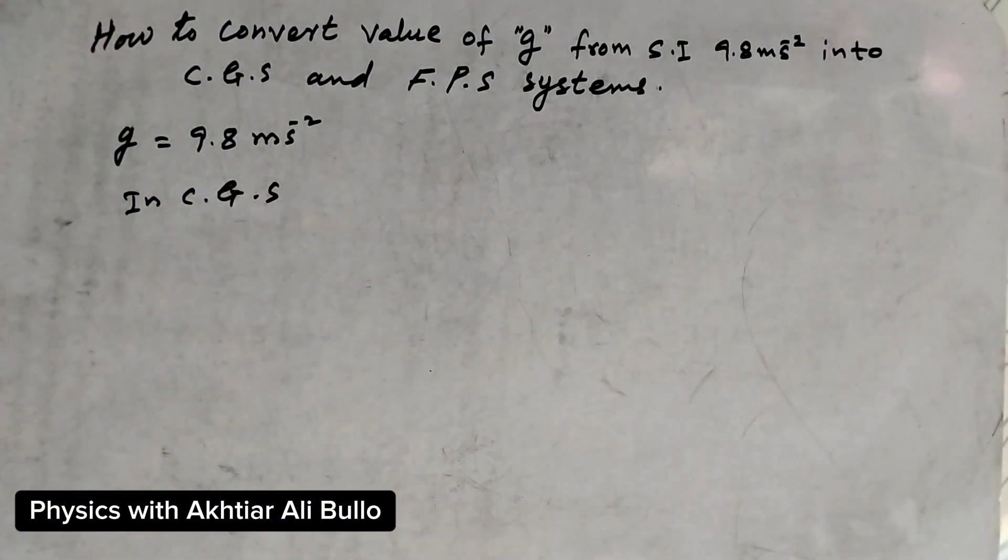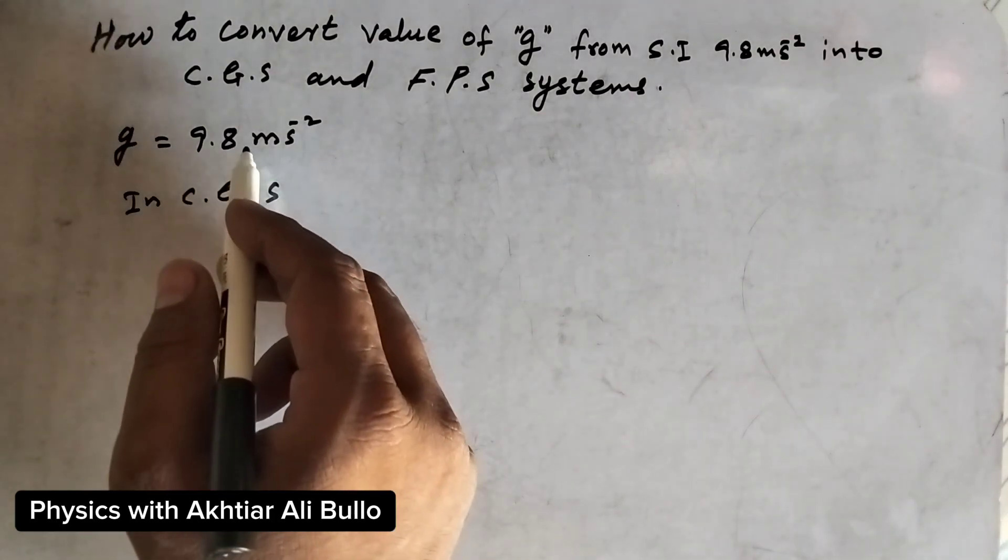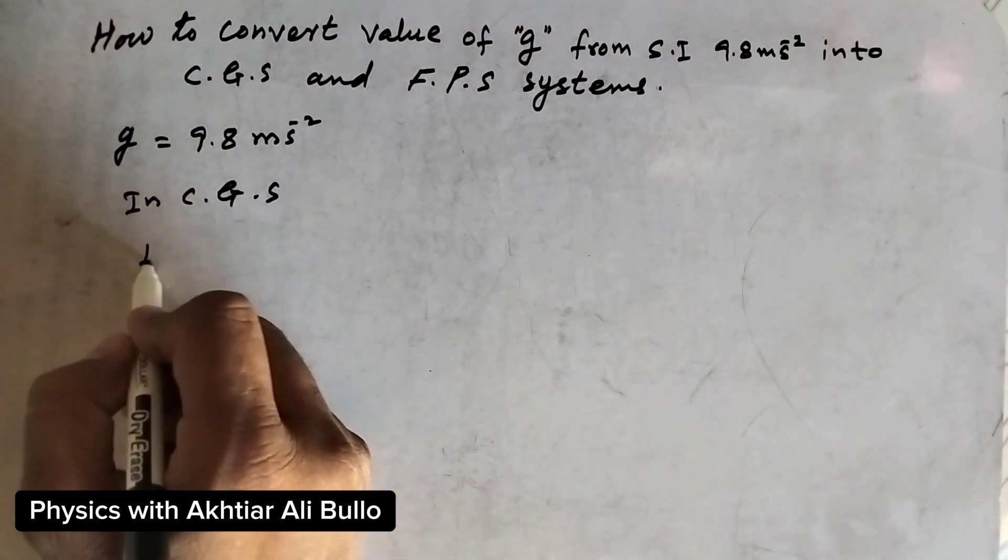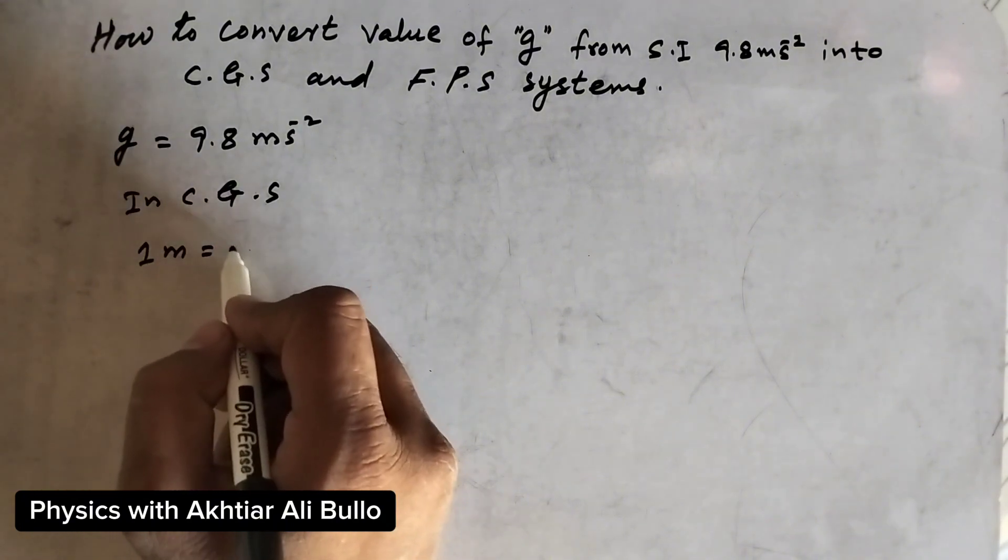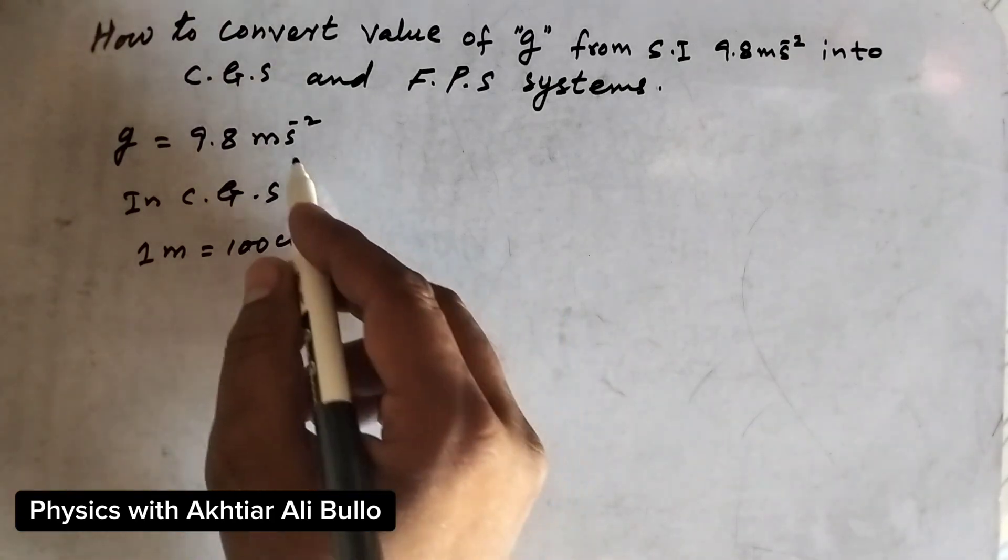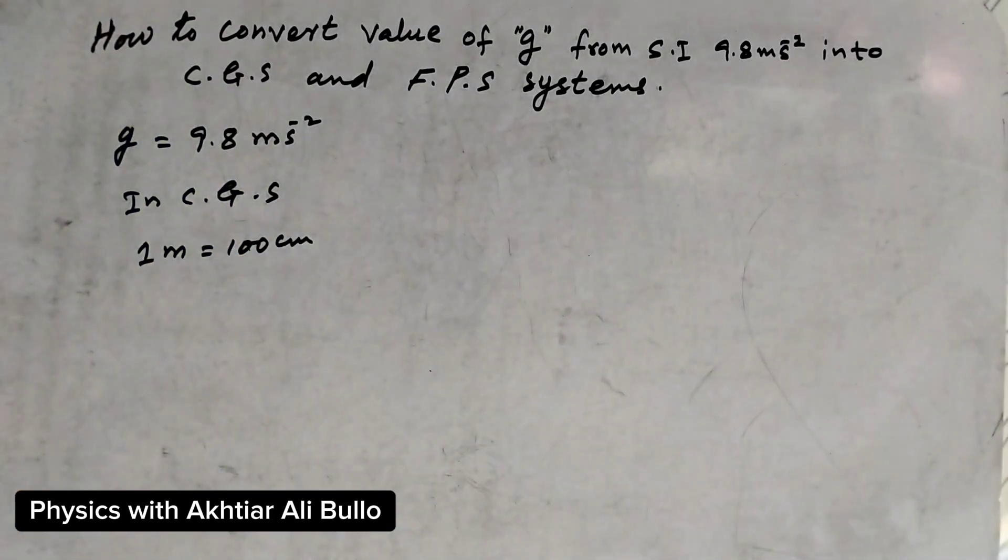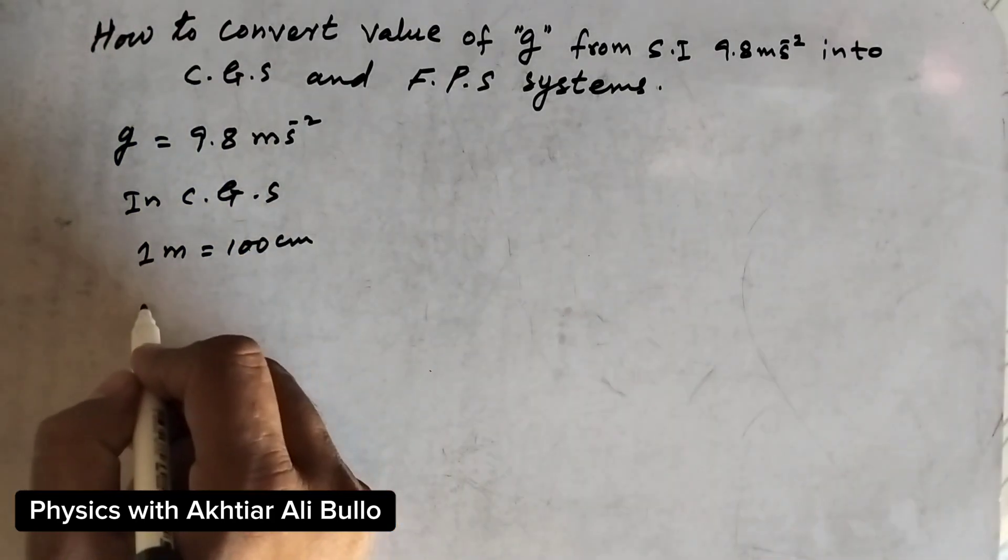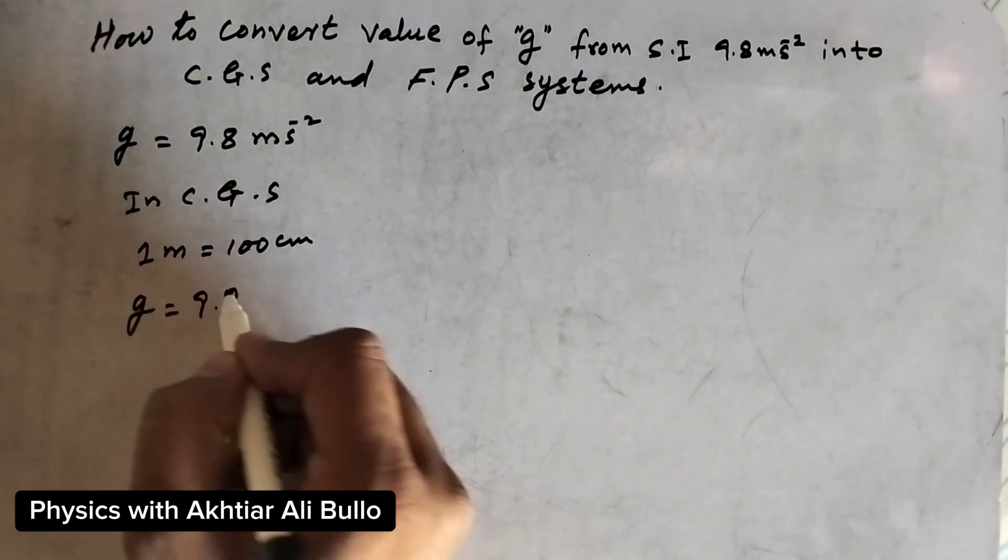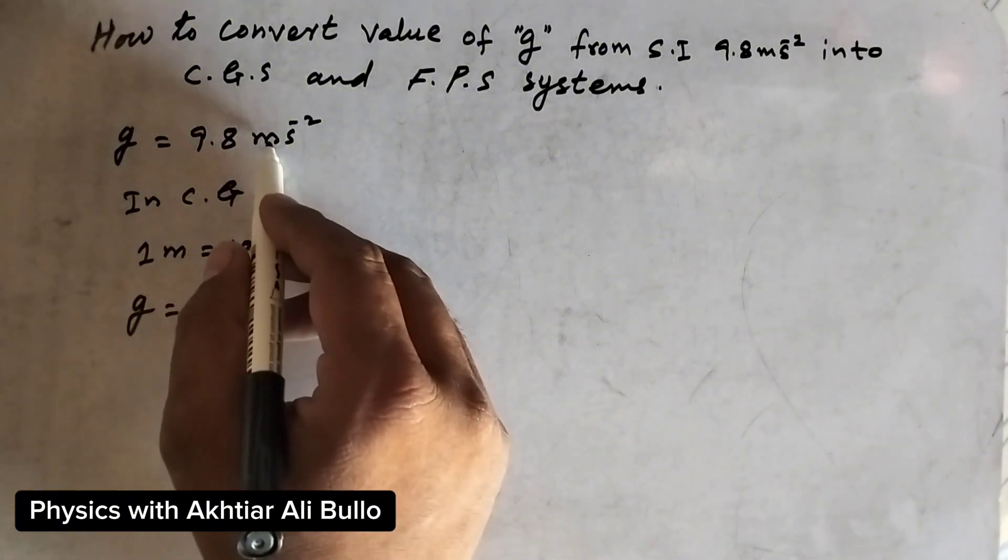In the CGS system, we know that 1 meter equals 100 centimeters, and seconds remain the same. So the value of g will be 9.8 times 100 centimeters per second squared.